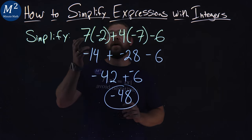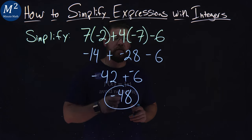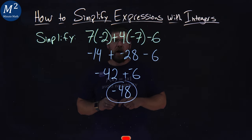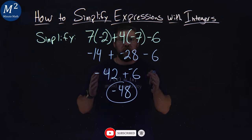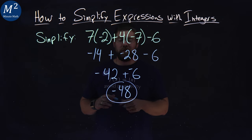And there we have it. We simplified our expression and got negative 48. I hope you learned something about how to simplify expressions with integers. If you did, make sure you like this video and subscribe to our YouTube channel. This helps us make more free math lessons for you and everyone else. So, as always, thanks for watching.